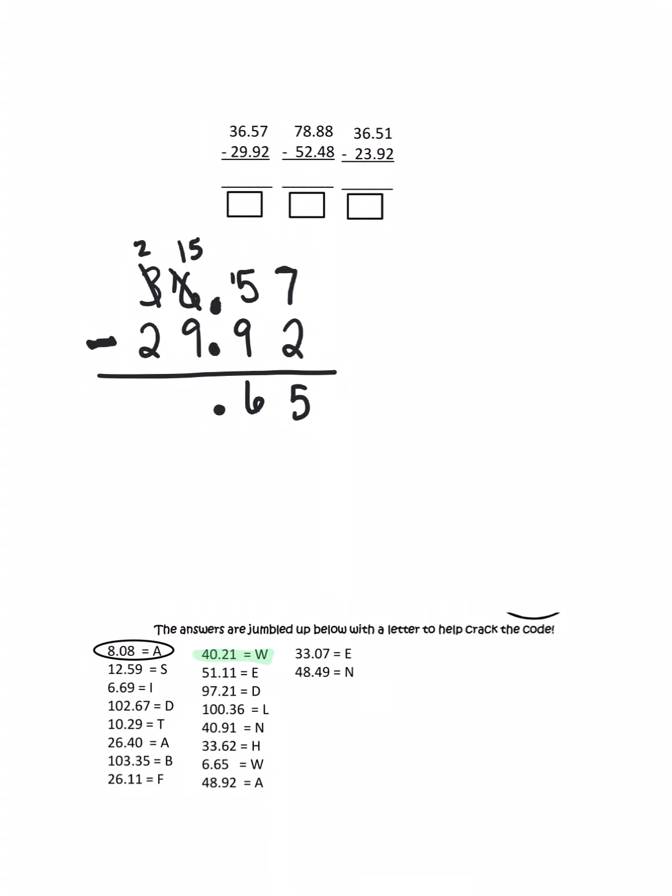Drop down your decimal point. Fifteen minus nine is six again, and two minus two is zero. So for this one, the difference between these two numbers is 6.65.